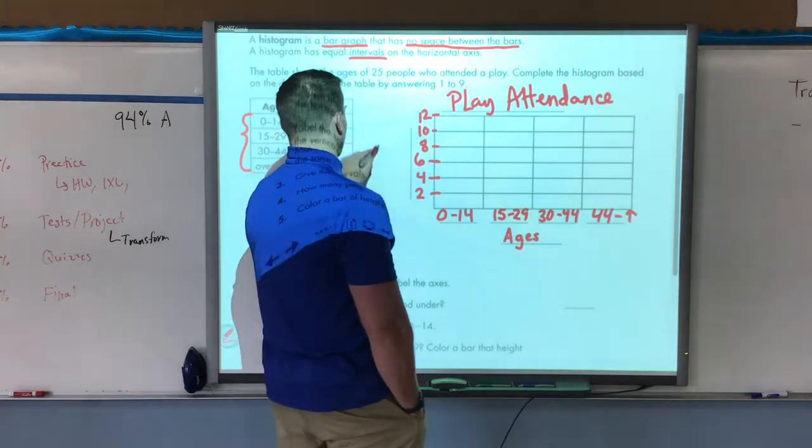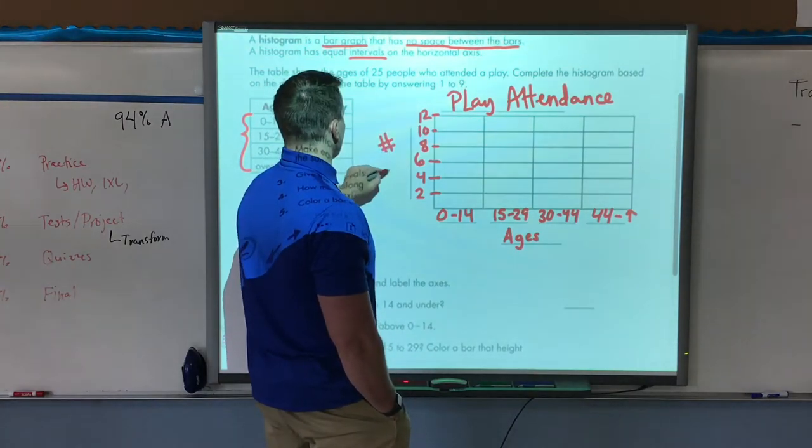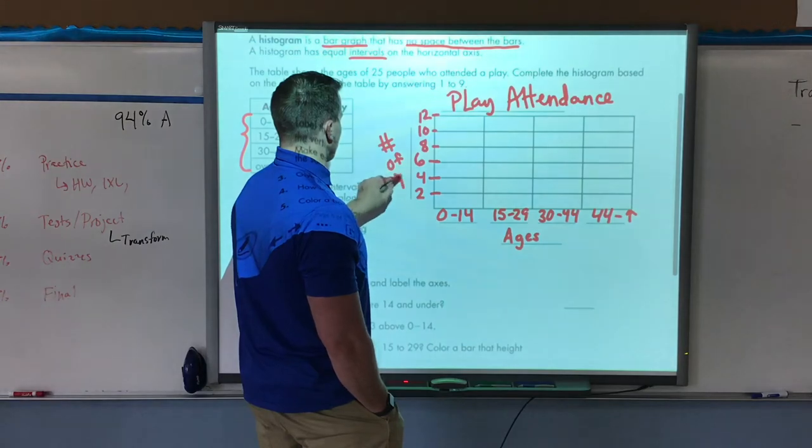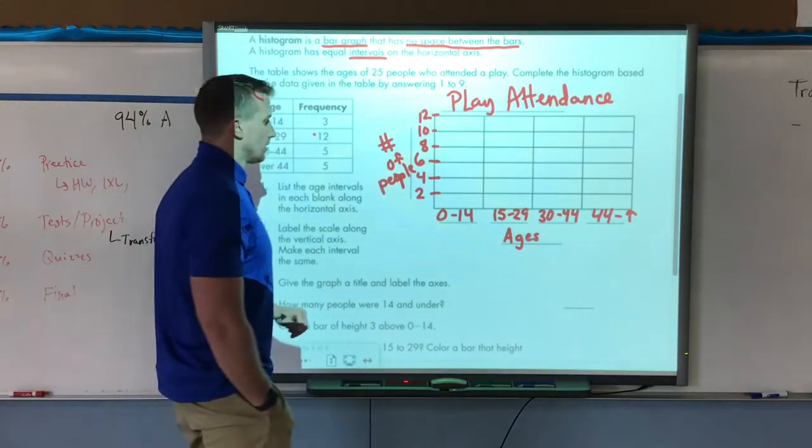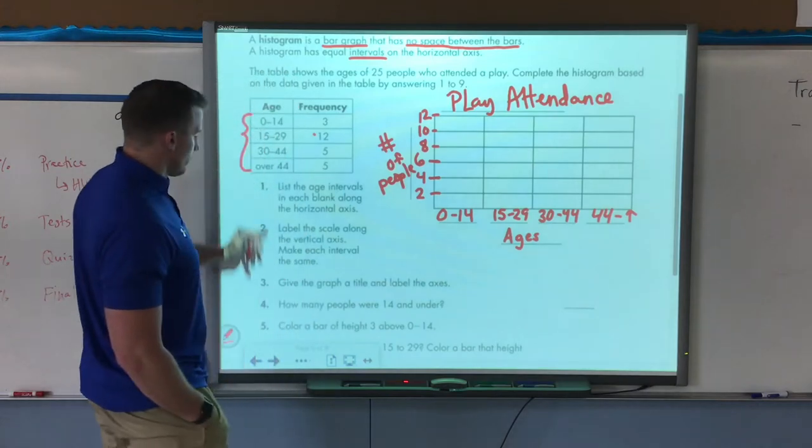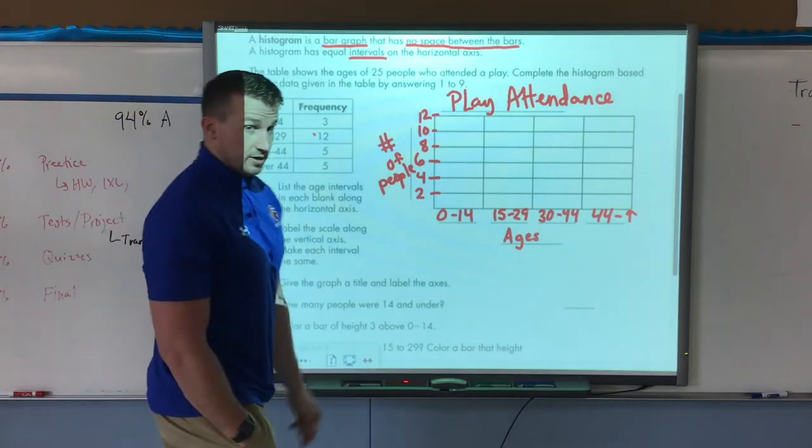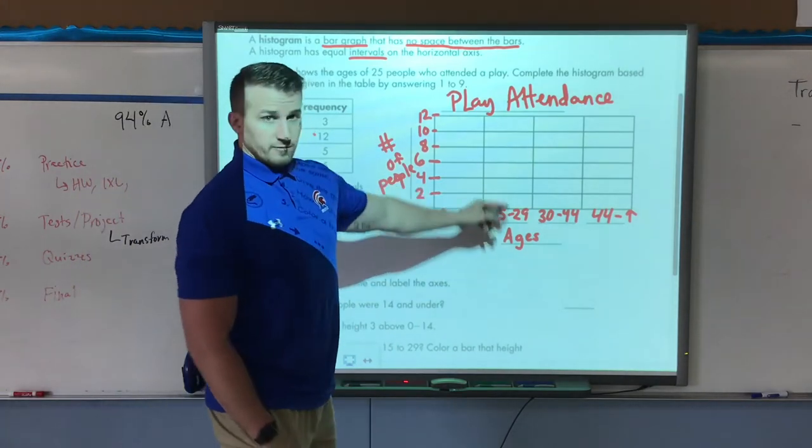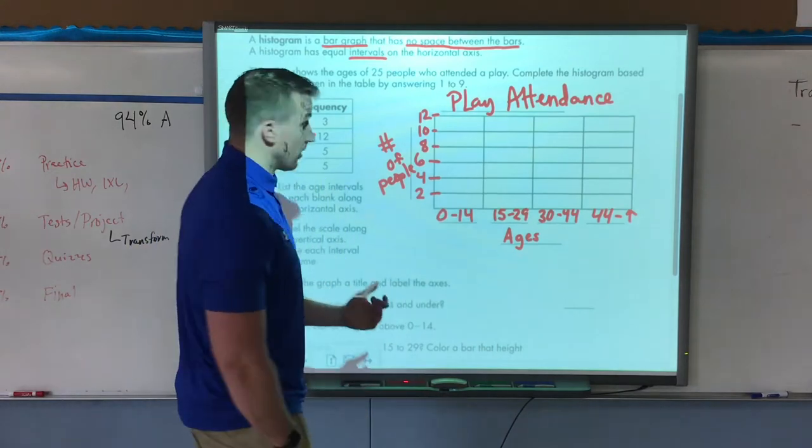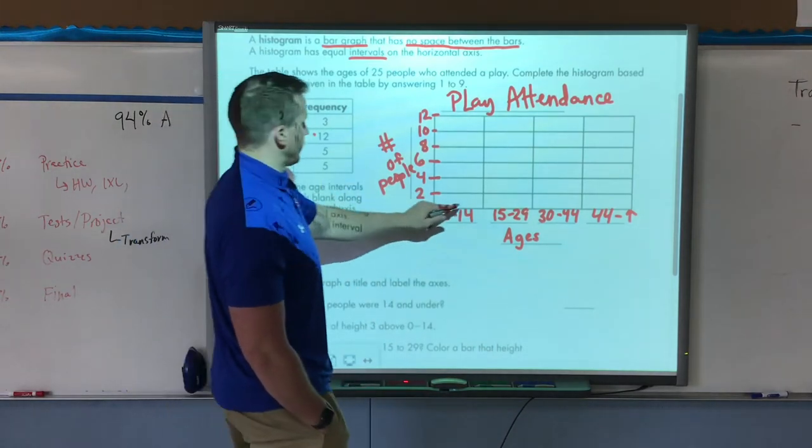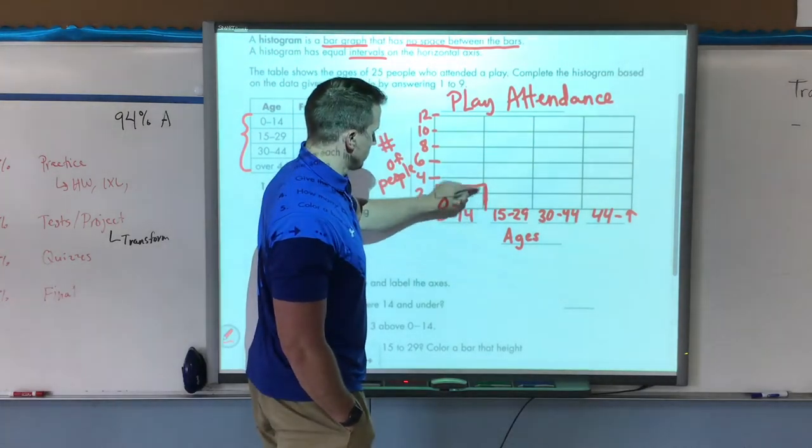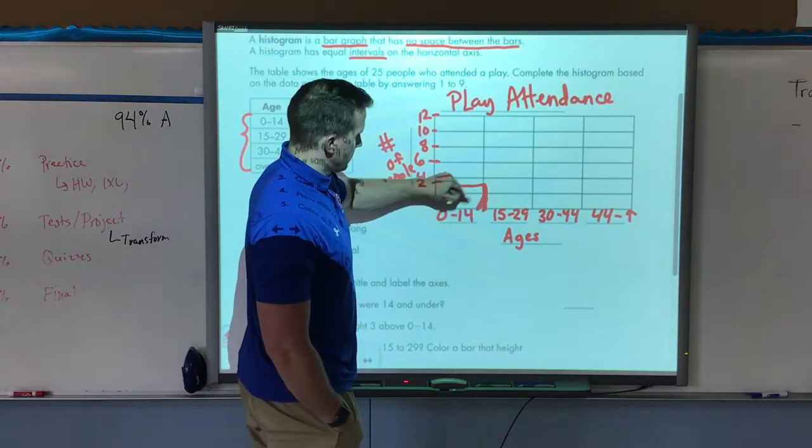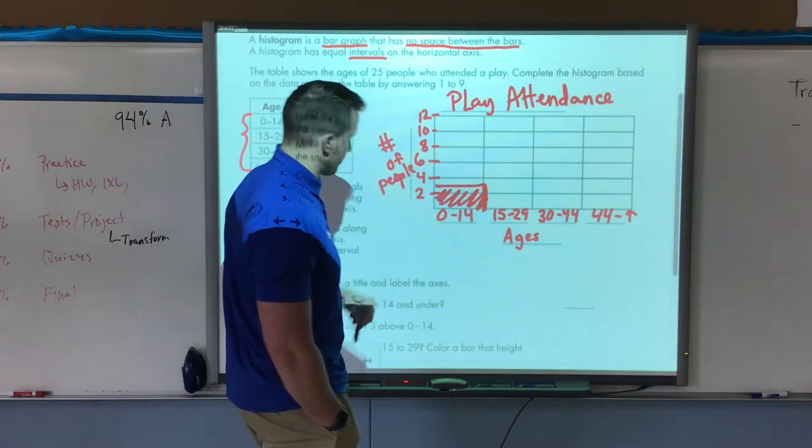On the side here this is labeled number of people. That's my frequency, the number of people. Now how many people were 14 and under? I connect and fill my histogram or my bar based on how many people. So that was three. Three would be right between two and four. And now I would fill that in.